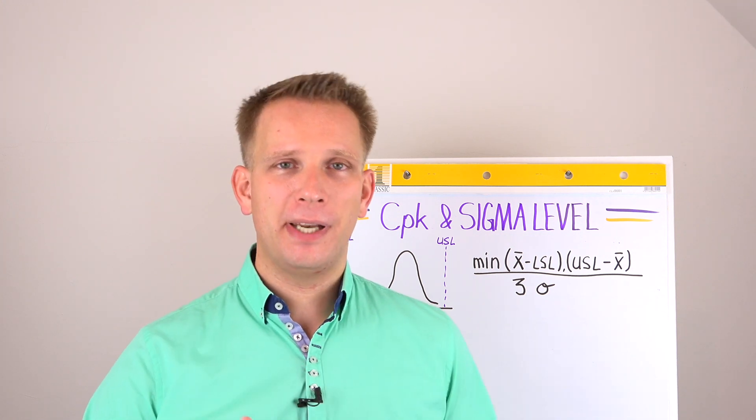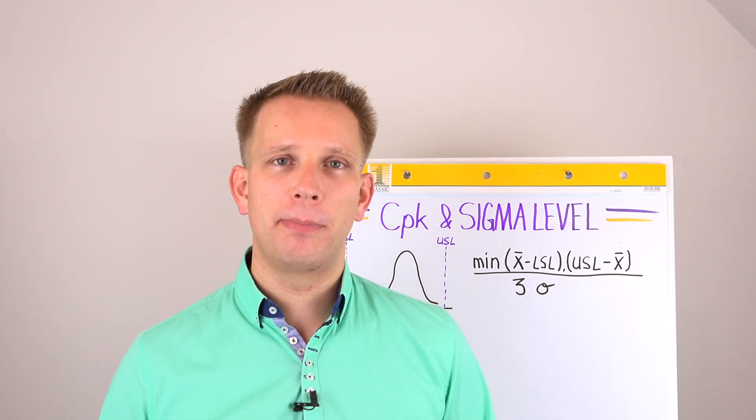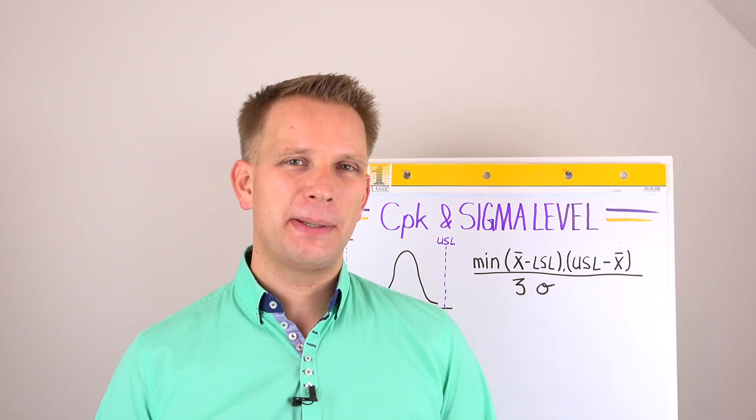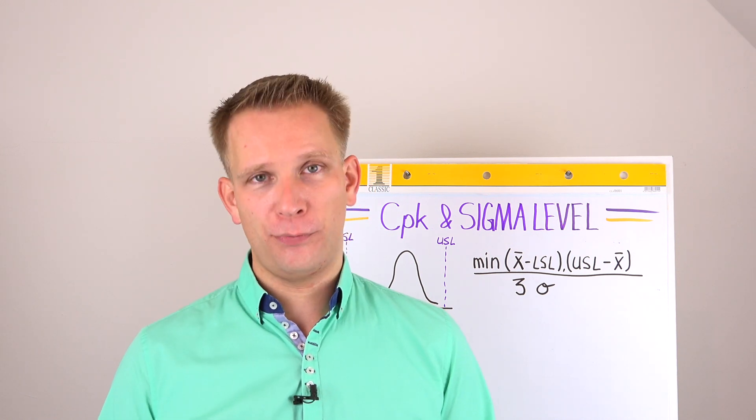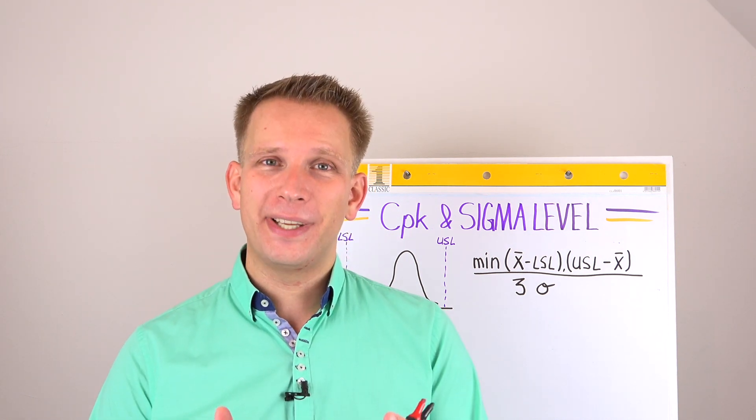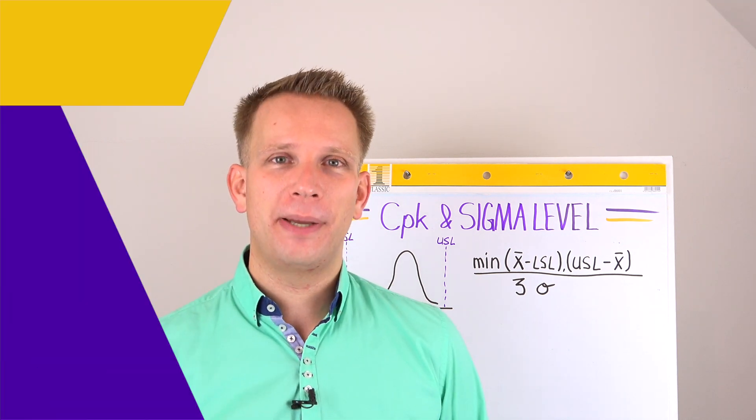Moving to Six Sigma, your sigma level and your CPK or process capability are directly linked. They basically use the same type of formula. So let's dive in and see how to translate between the two of them.